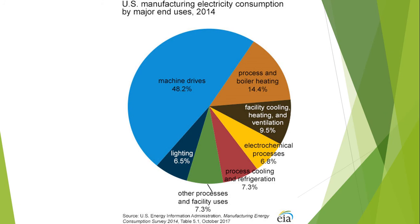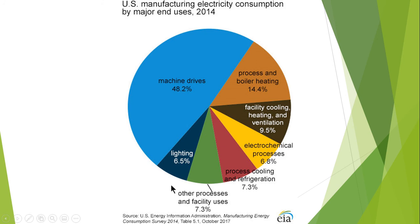This graph shows United States manufacturing electricity consumption by major uses and end user for 2014. 48.2 percent is energy consumed by machine drives, 14 percent in boiling and heating systems, 9.5 percent for cooling, heating, and ventilation, 6.8 percent in electrochemical processes, 7.3 percent for refrigeration, 7.3 percent for other processes and facility uses, and 6.5 percent for lighting.